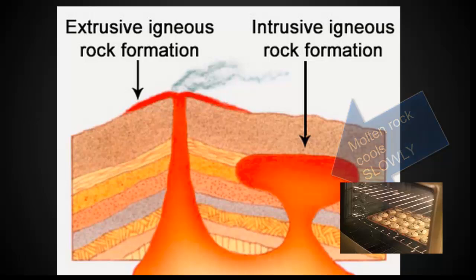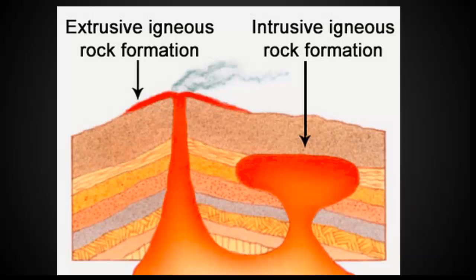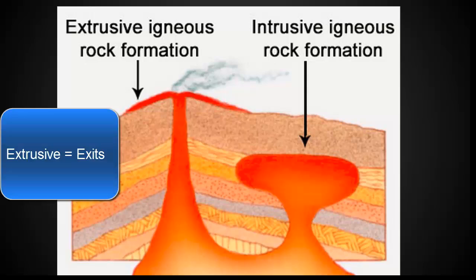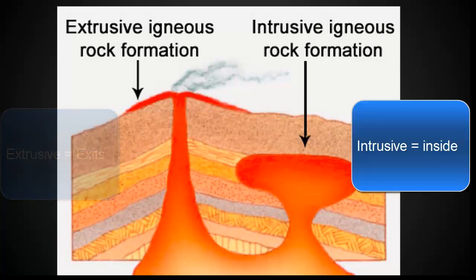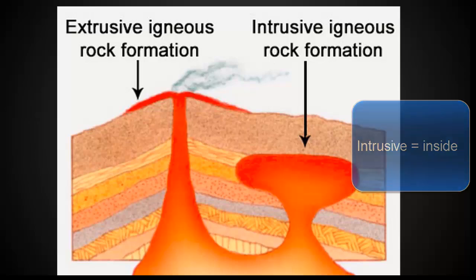Think of it like cookies in the oven: if you turn the oven off but leave the cookies inside, it's going to take a lot longer for them to cool — that's like an intrusive igneous rock. So extrusive is when the rock exits the earth's crust and is on the surface, and intrusive is when it's still inside the earth's crust.